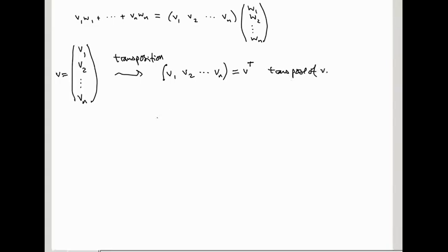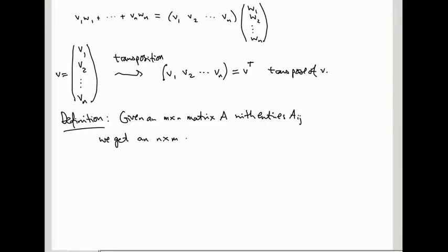So more generally, given an m by n matrix A with entries A_ij, we get an n by m matrix. So the number of columns and the number of rows are switched.